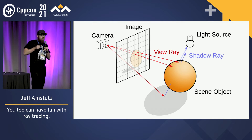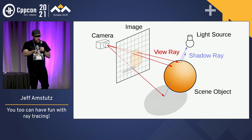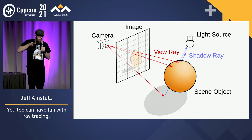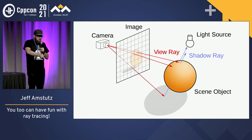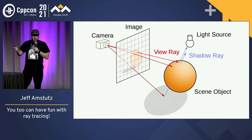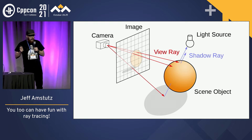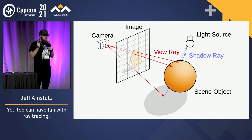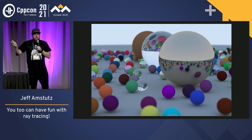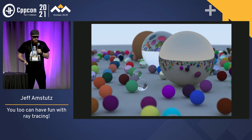What you do in ray tracing is go backwards. You use rays — an origin and a direction — and you go through a pixel in your image and try to figure out where the light came from. With that, if you have the ability to intersect a ray with a sphere, you can make an image like this, which is pretty cool.